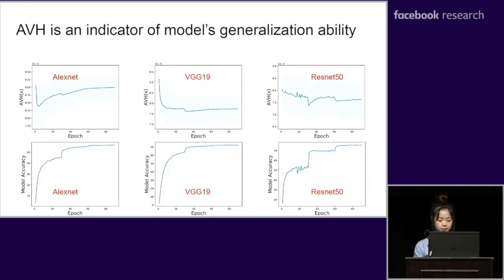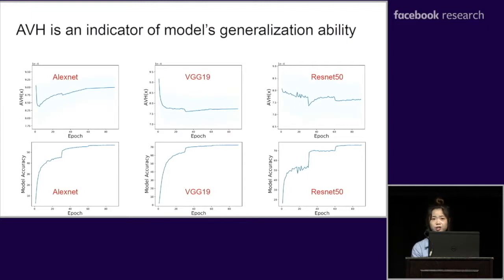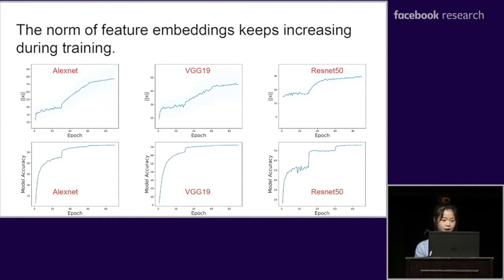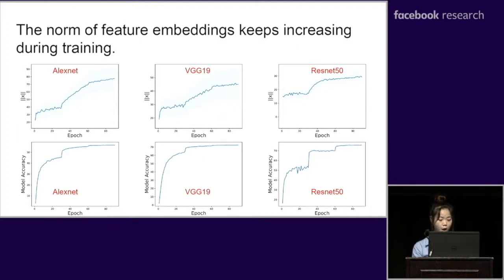Across different models, better performing ones have lower AVH scores. For example, both VGG-19 and ResNet-50 are much better than AlexNet in terms of final AVH score, while VGG-19 is slightly worse than ResNet-50 — matching empirical performance on tasks requiring good generalization such as object detection and segmentation. On the contrary, the norms of feature embeddings keep increasing during training. However, because the top predicted class does not depend on embedding norm, the norm does not reflect prediction results. We argue the norm only helps with the optimization process and does not directly correlate with model generalization.